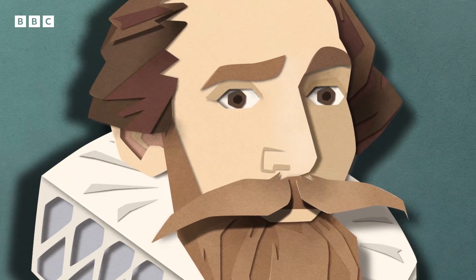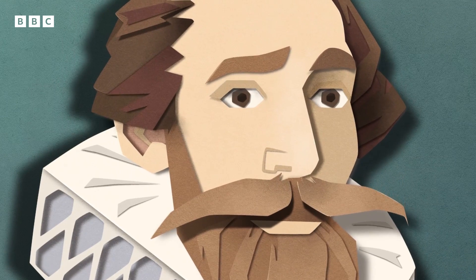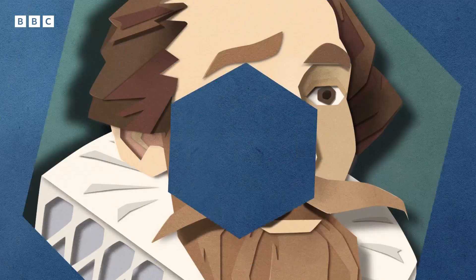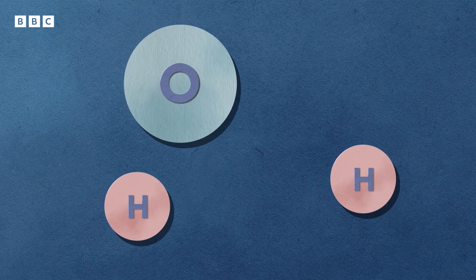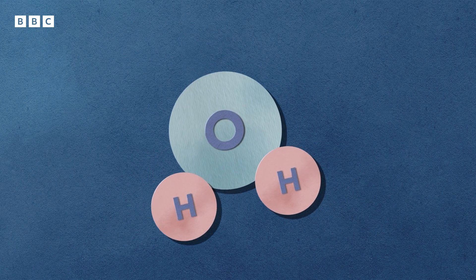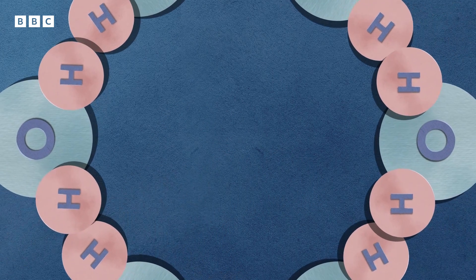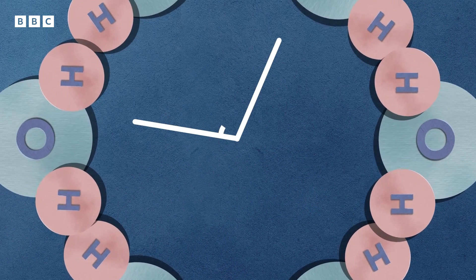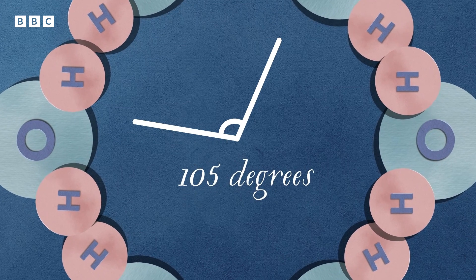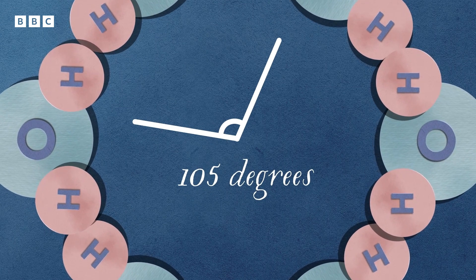It took 400 years for his theory to be proven. What Kepler didn't know at the time is that each molecule of water, or H2O, is made up of two hydrogen atoms and one oxygen atom. As the water molecules cluster together when they freeze, the angle between the hydrogen atoms is always approximately 105 degrees. And that gives us the six sides.